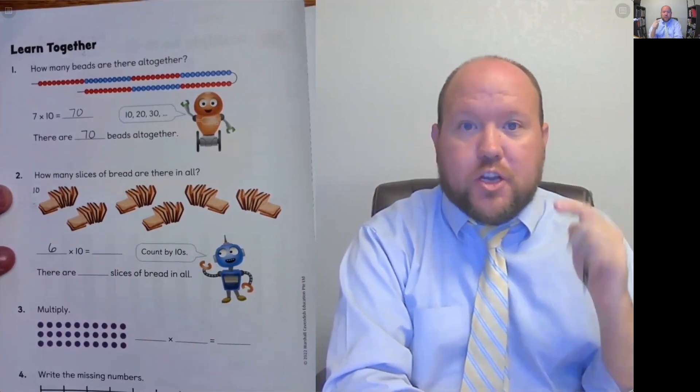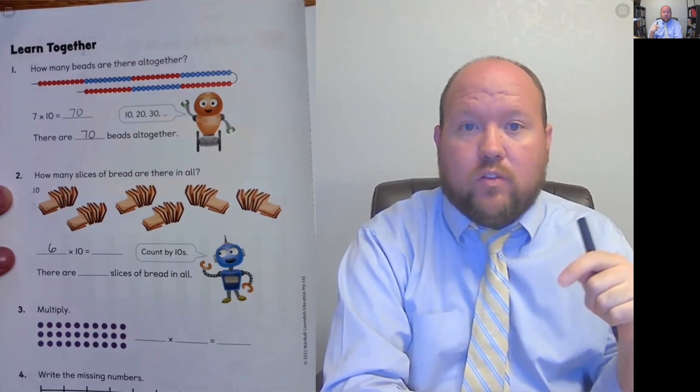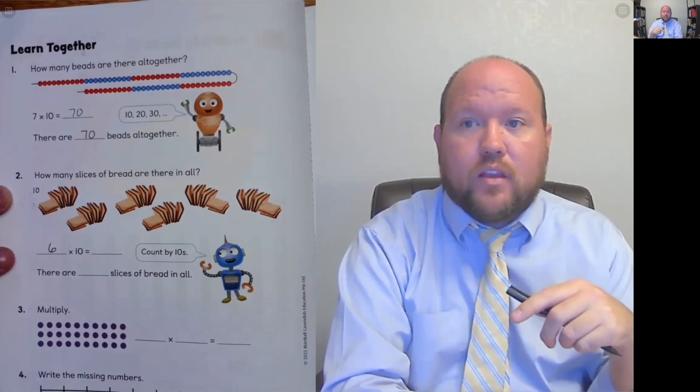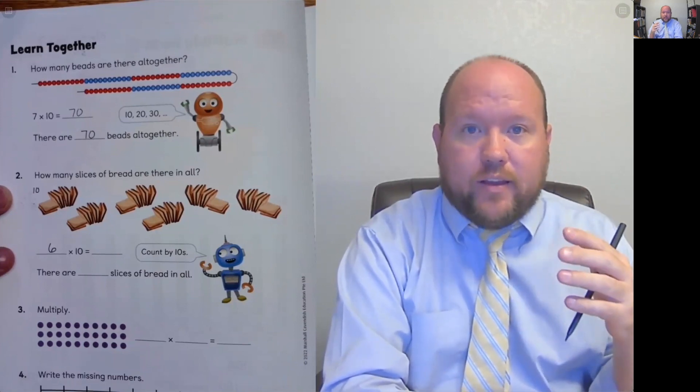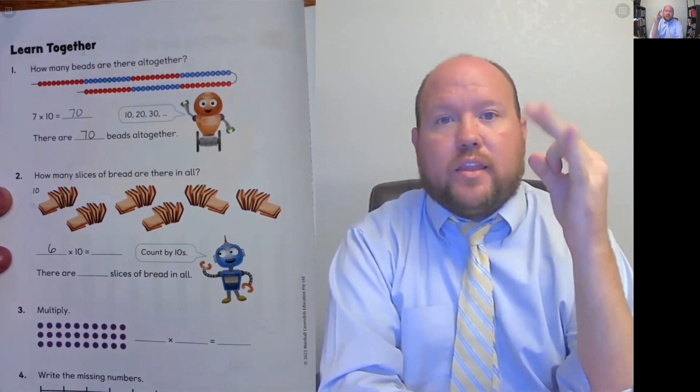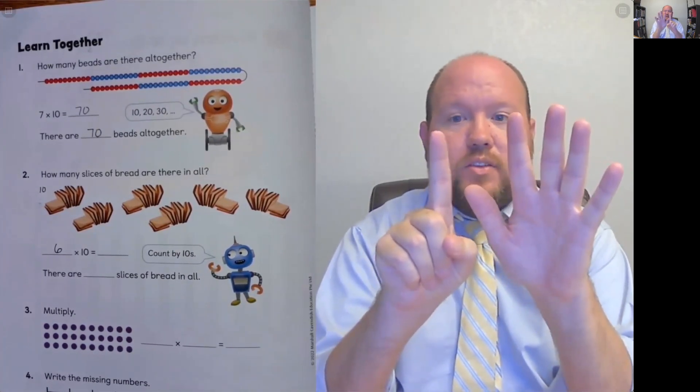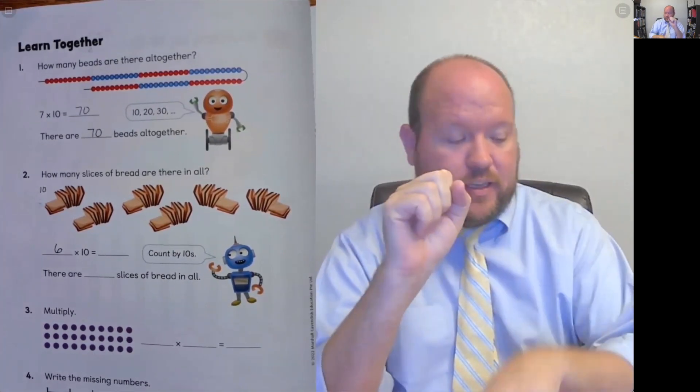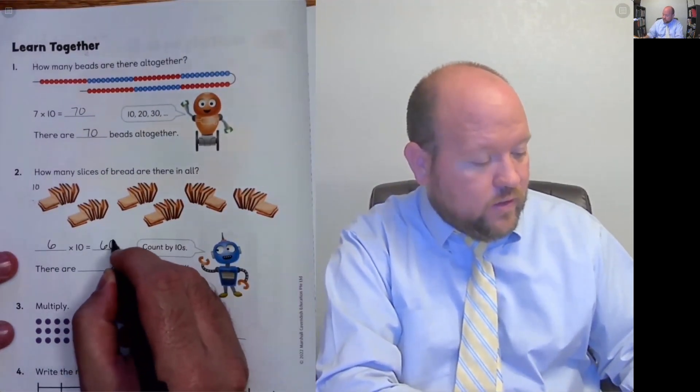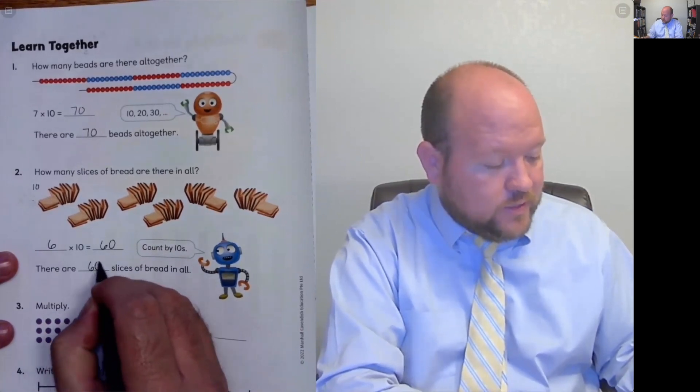Now, how do we figure that out? We should know 6 times 10 equals. We can think about moving the place value over. That's one way to think about it. Or we can count by tens. So counting by tens, 10, 20, 30, 40, 50, 60. So now I got 6 fingers up, I got to 60. So there are 60 pieces of bread. There are 60 slices in all.